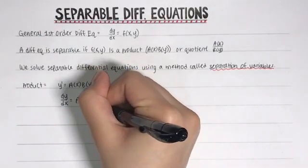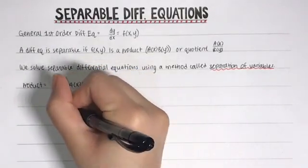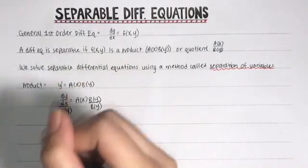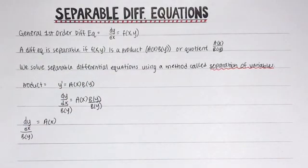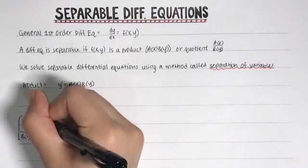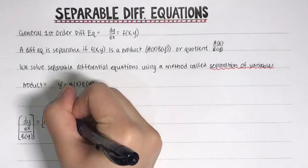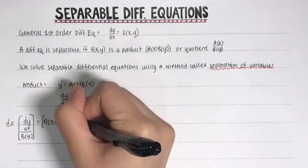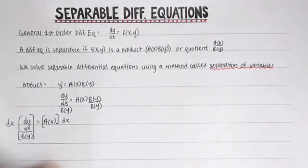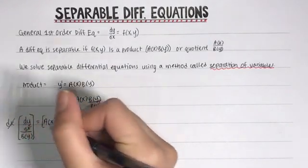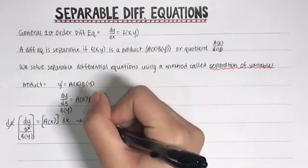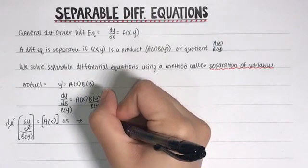If we divide both sides by b of y, then a of x will be by itself on the right. But we still have the dx on the left side and we need that to be on the same side as a of x. So we multiply both sides by dx. Now we have dy and b of y on one side and dx and a of x on the other side. We just separated the variables.